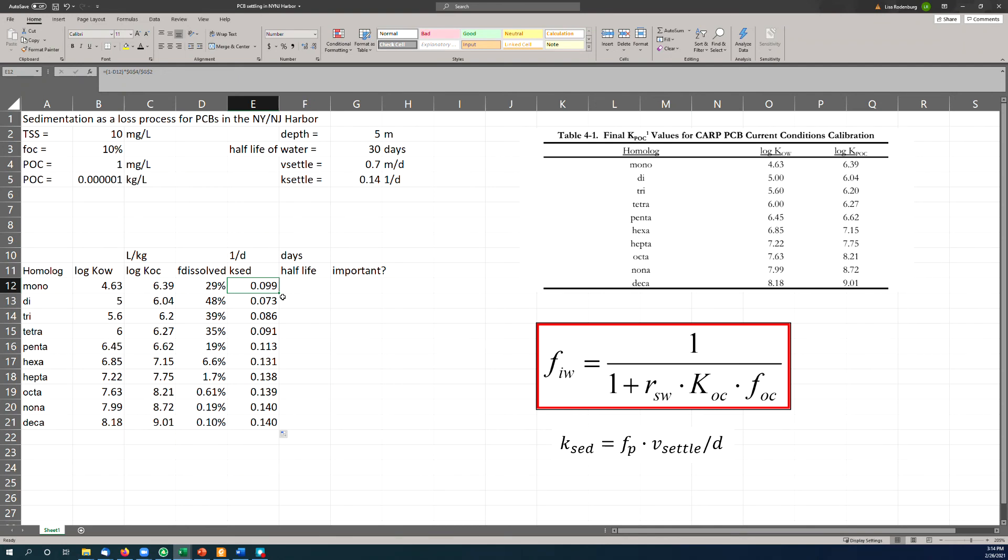So if I want to calculate a half-life, we remember how to do that. Natural log of 2 divided by K. Our half-life ranges from about 5 days for the stuff that's almost completely absorbed to the particles, down to maybe 10 days for the stuff that has a substantial dissolved fraction. And is this half-life suggest that this process is important compared to the half-life of water? Well, the half-life of water is 30 days. So yeah, absolutely. This is an important process.